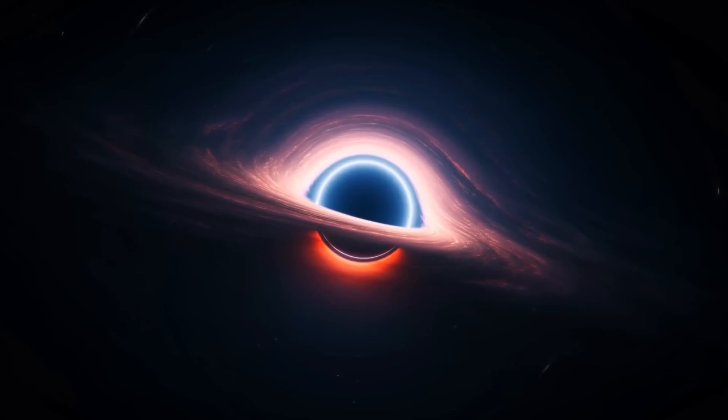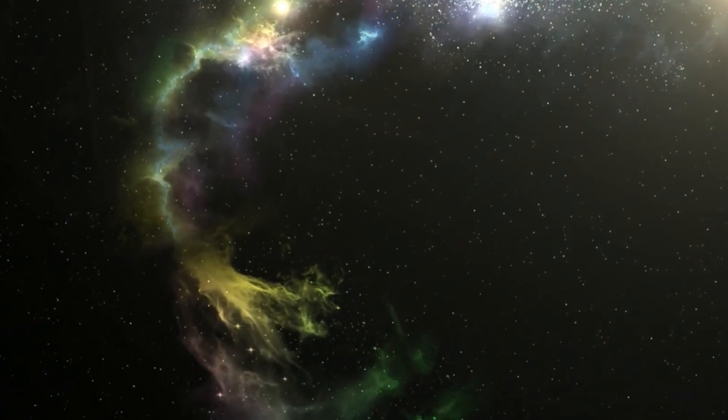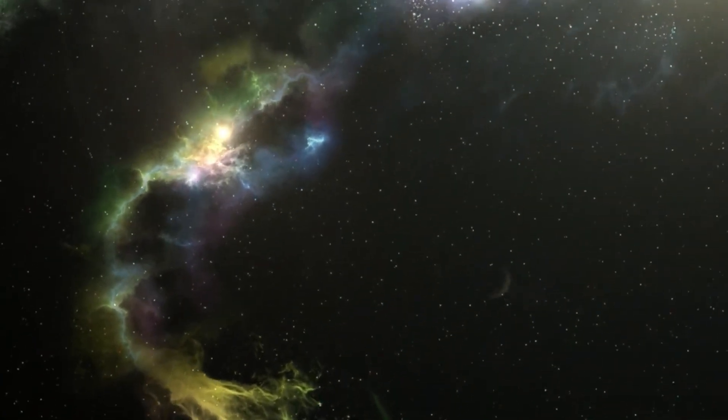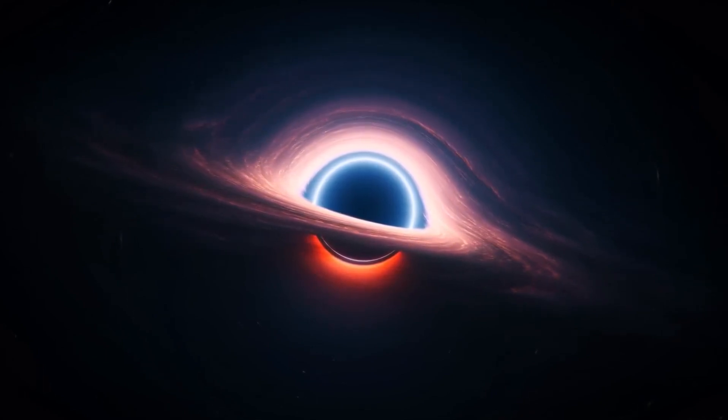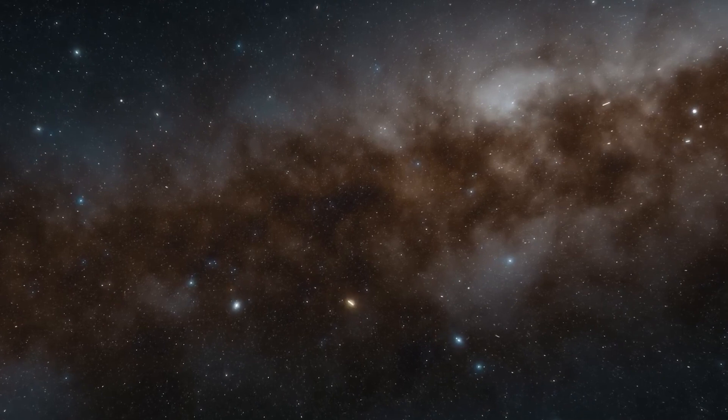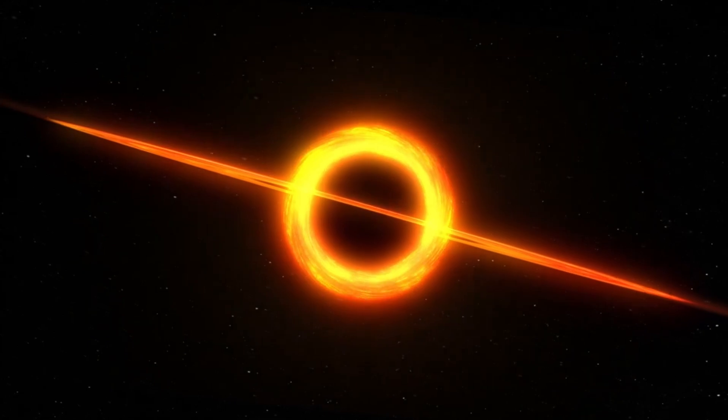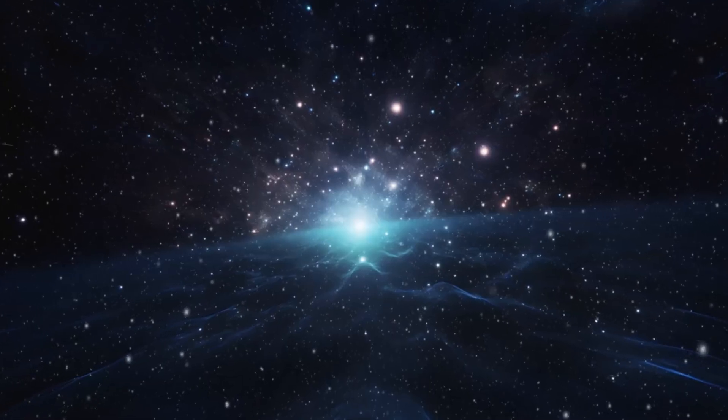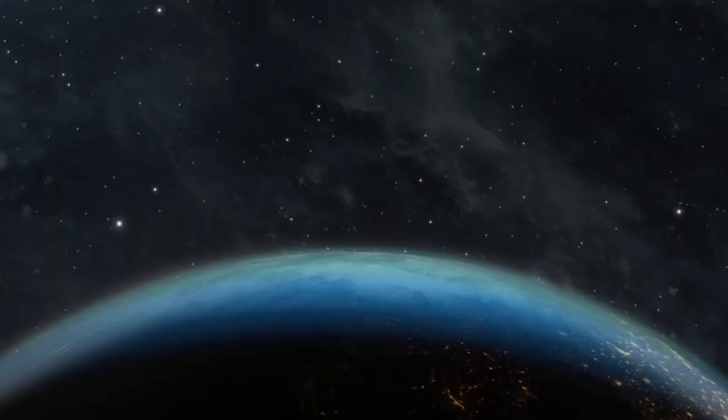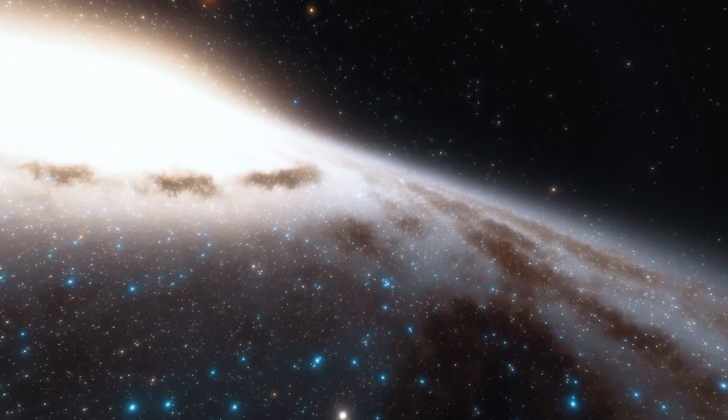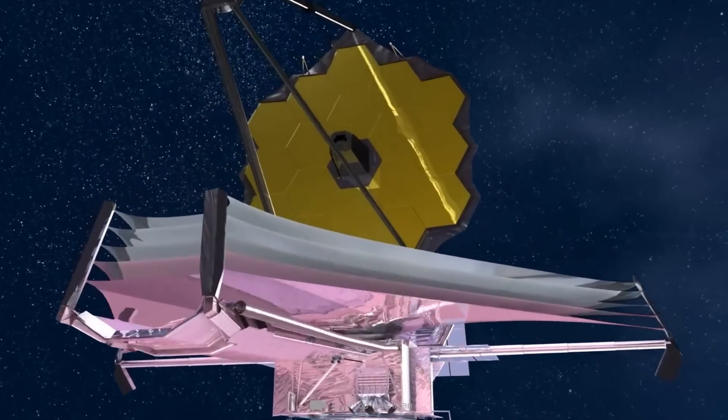Another area of interest is the study of gravitational waves emitted by the black hole as it interacts with its surroundings. By detecting and analyzing these faint ripples in space-time, scientists can learn more about the dynamics of black hole accretion and the formation of galaxies in the early universe. Finally, there is the tantalizing possibility of studying the effects of the black hole's gravity on the fabric of space-time itself. By observing how light bends and distorts as it passes near the black hole, astronomers can test the predictions of Einstein's theory of general relativity and probe the nature of gravity in the extreme conditions near a black hole.